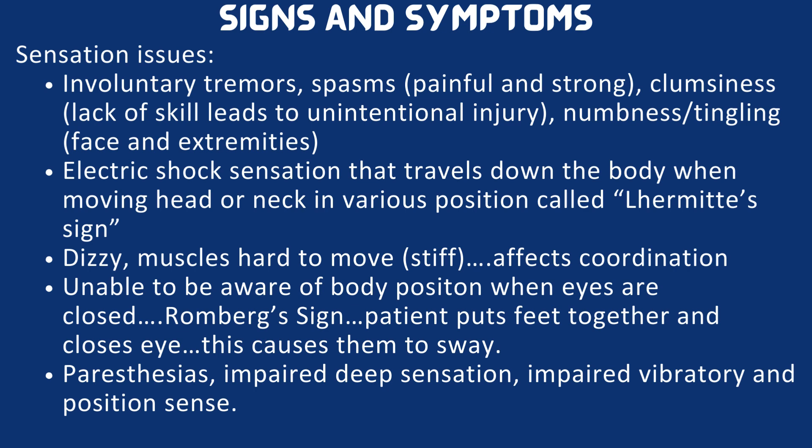Sensation issues include involuntary tremors, painful and strong spasms, clumsiness that can lead to unintentional injury, and numbness or tingling in the face and extremities. There may also be an electric shock sensation that travels down the body when moving the head or neck, which is called Lhermitte's sign. The patient may be dizzy, have muscles that are hard to move, and stiffness that affects coordination. The patient may be unable to be aware of body position when eyes are closed, which is assessed using the Romberg sign — the patient puts feet together and closes their eyes, which may cause them to sway.